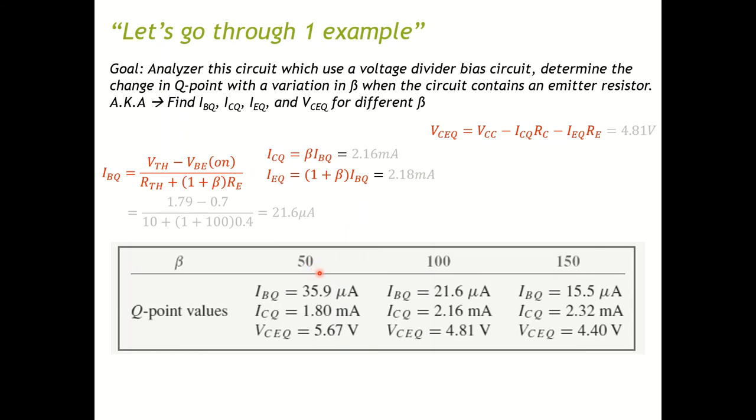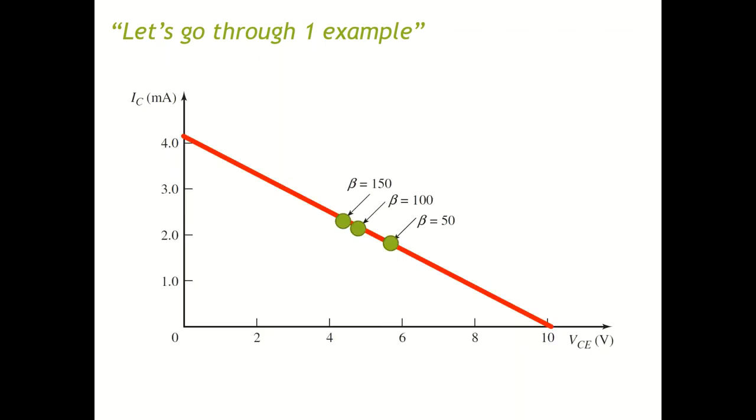If you need to increase the collector current, you cannot just increase the β by five times and bring up your collector current by five times. That's not true, so be careful about that.